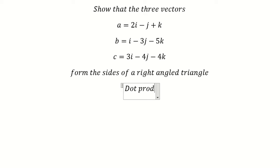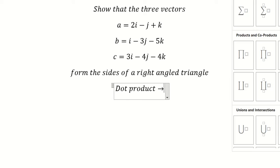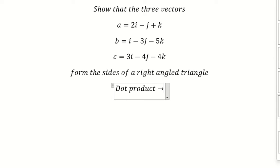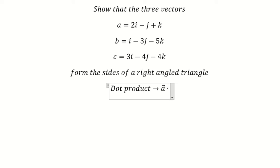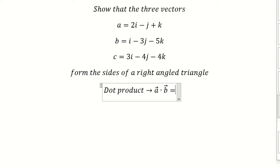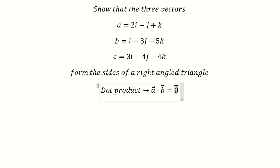The dot product helps us make sure that two vectors equal zero. So let's say we have vectors a and b.